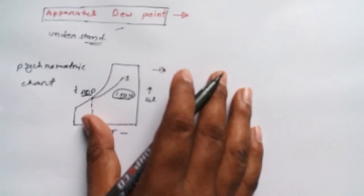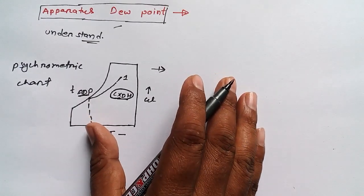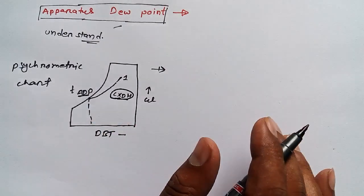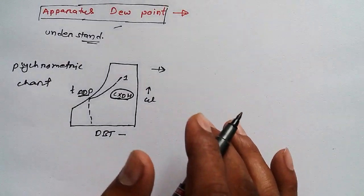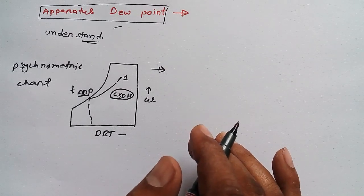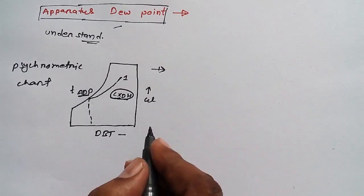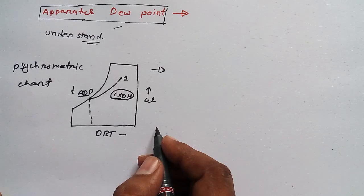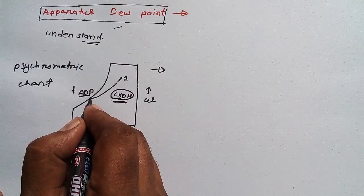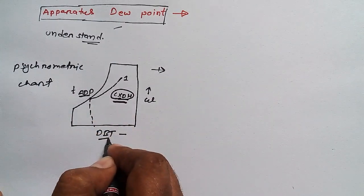So this is all about apparatus dew point. Basically what happens is we don't understand its concept, that's why we usually face problems understanding this. For competition examinations, we have to understand two things: one is what we are getting this point for, and what this point is all about.